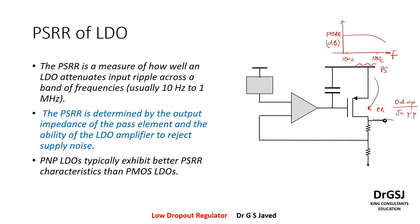The PSRR is determined by the output impedance of the pass element and the ability of the LDO amplifier to reject supply noise. What you see here is your output impedance and the ability represented by the gain. Typically, as the gain of the amplifier goes higher, the ability to reject supply noise becomes better.